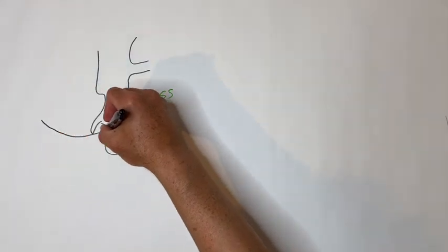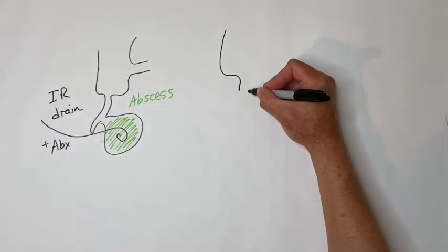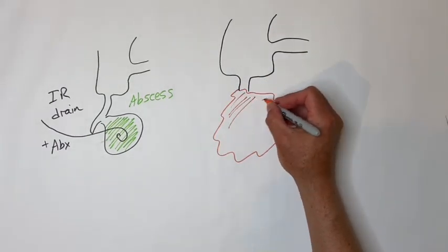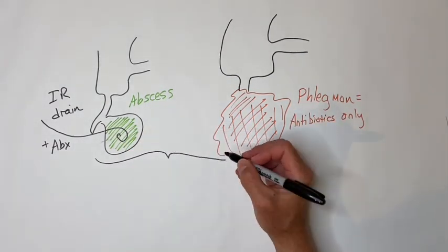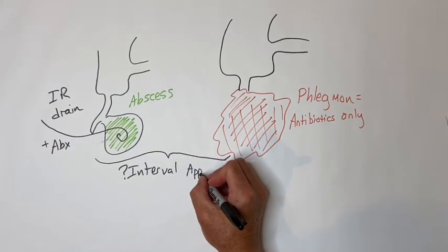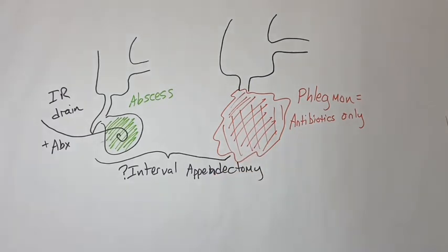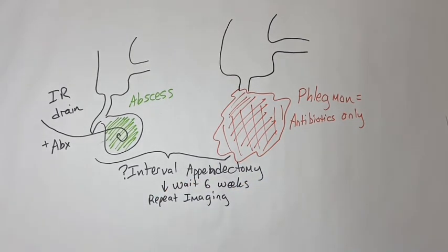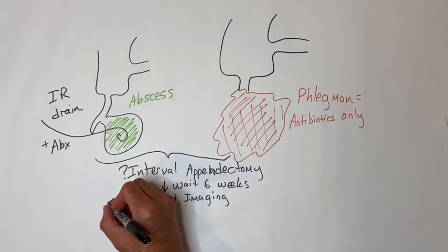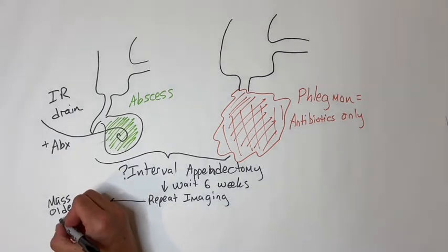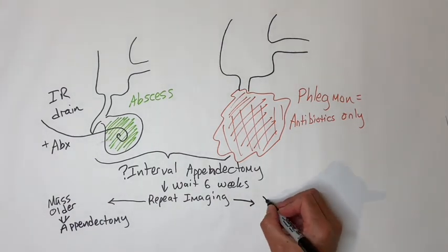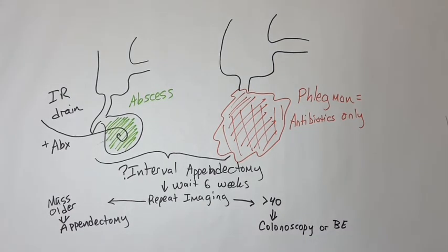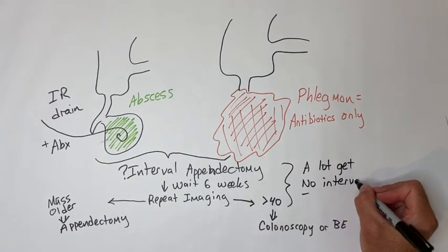If there is a drainable abscess and the patient is otherwise stable, IR drainage and antibiotics is best — don't do surgery right away. If there is a phlegmon without a drainable abscess, just antibiotics and no immediate surgery. If you treat a ruptured appendix with abscess or phlegmon non-operatively, you will need to decide about interval appendectomy, usually at about six weeks. Anybody with imaging six weeks later showing a mass in the appendix should have it removed to rule out cancer, and anybody over 40 should have a barium enema or colonoscopy.